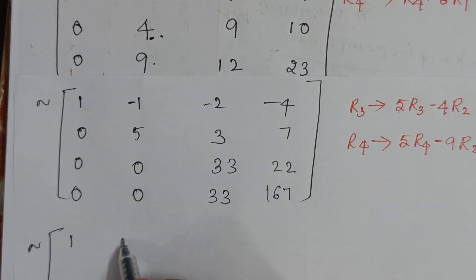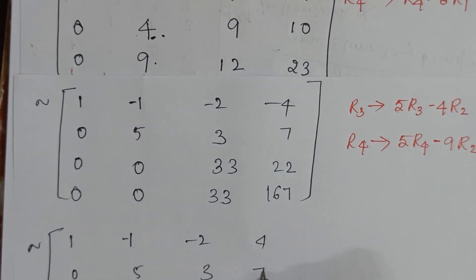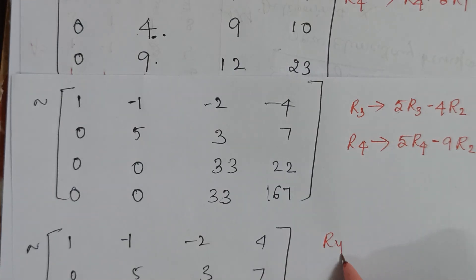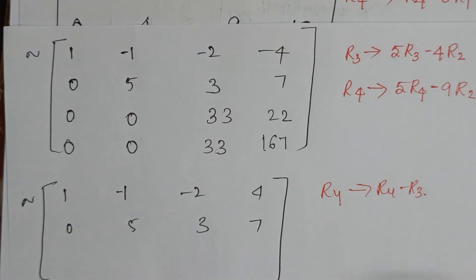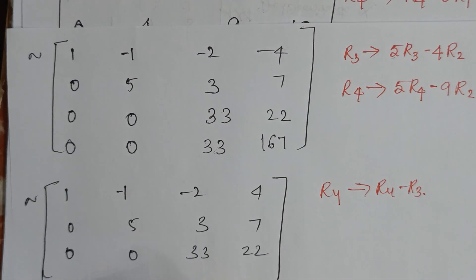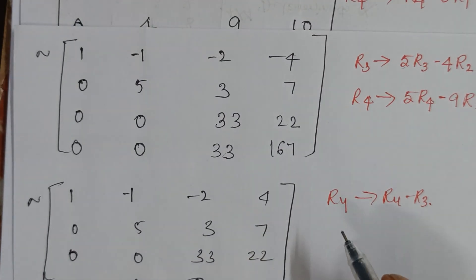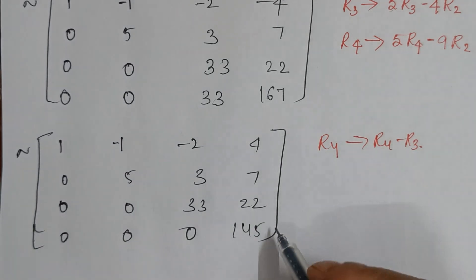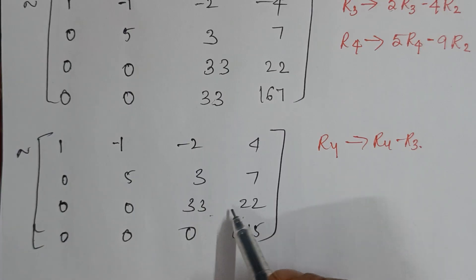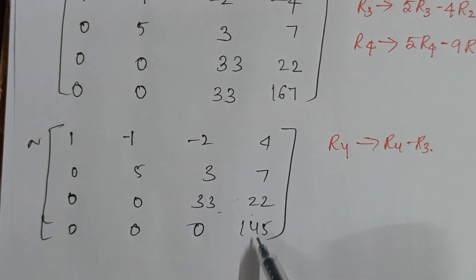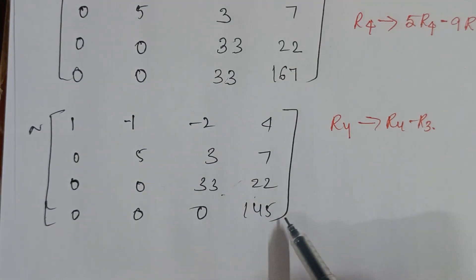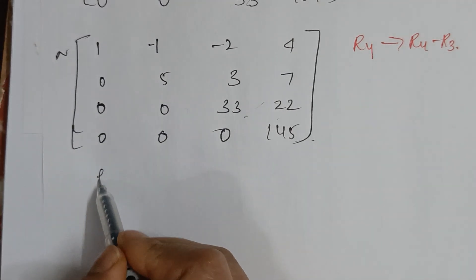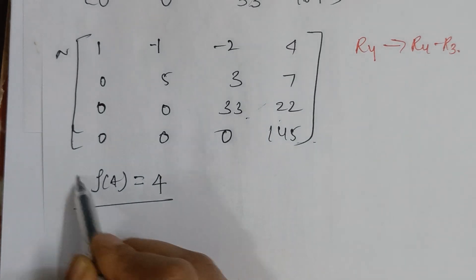Now I want zero in the third column of row 4. So I perform R4 → R4 - R3. Row 3 stays as it is: 0, 0, 33, 22. For row 4: 0, 0, 33 - 33 = 0, 167 - 22 = 145. The matrix is now in echelon form. You can divide by 33 or 145, but you'd get fractions, so it's better to keep it as is. The rank of matrix A is 4.